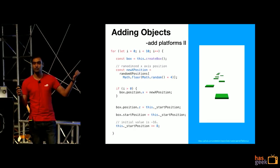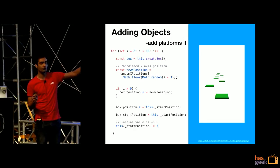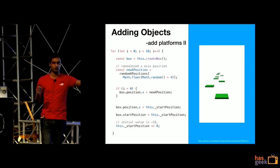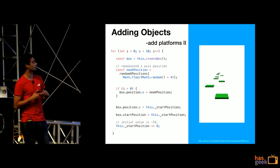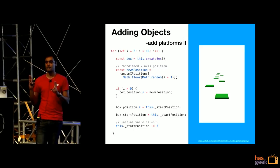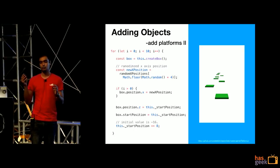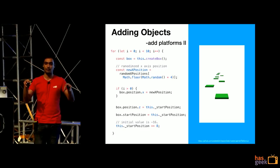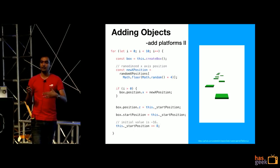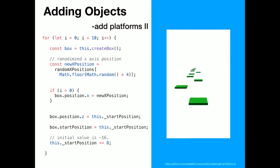Next we put this logic inside a loop and build ten such platforms. We create a new box and randomize its X position so the user has the difficulty of swiping left and right with platforms at different places to make the ball jump at. Then we keep incrementing the Z position by 8 — so the first platform is here, second one is here, third one is here, and so on going into that empty space.